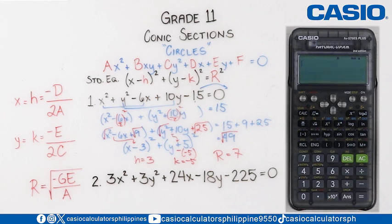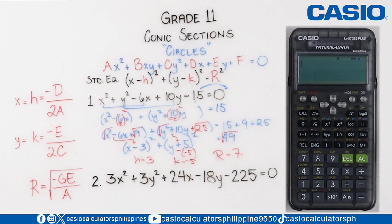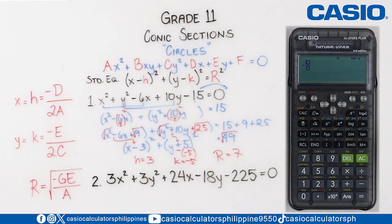Then, let's find the value of K, which is negative E over 2C. So, that is negative E. The value of E is positive 10, divided by 2. Our value of A is 1, and we press equal sign, and we get our value of K equals to negative 5, which is the same as what we got a while ago. So now, let's store this to our value of Y.